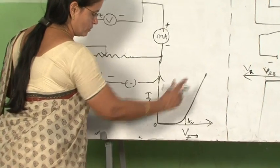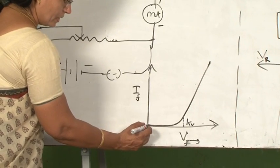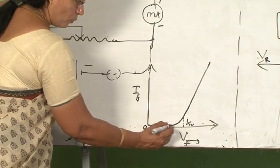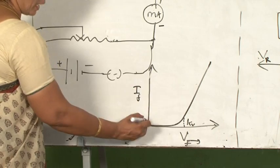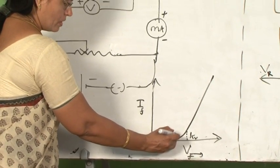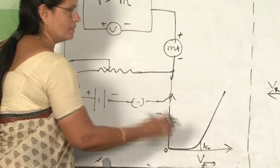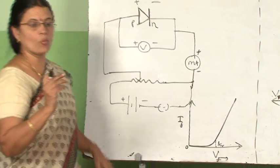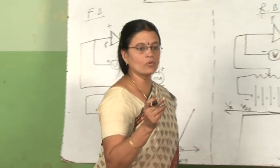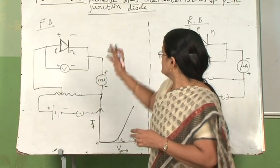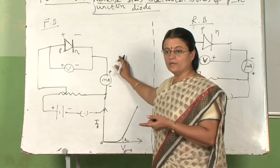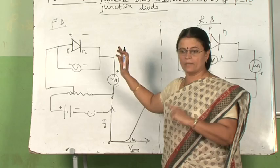If you see the graph carefully, you will understand that for initial some values of voltage applied, there is no current. The current is almost zero. This is because there is a minimum value of voltage to be applied to overcome the potential barrier. Then only the conduction will take place.